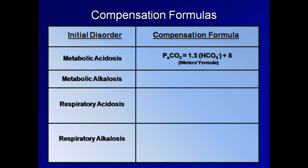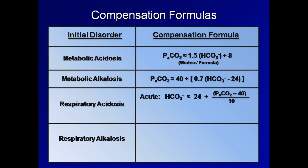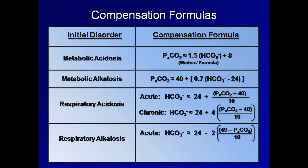For a metabolic alkalosis, pCO2 ≈ 40 + 0.7 × (measured bicarb − 24). For respiratory acidosis and alkalosis, it depends on whether the process is acute or chronic — it takes 12 hours to 5 days for a respiratory process to become chronic. For acute respiratory acidosis: bicarb ≈ 24 + (pCO2 − 40) / 10. For chronic respiratory acidosis: bicarb ≈ 24 + 4 × (pCO2 − 40) / 10. For acute respiratory alkalosis: bicarb ≈ 24 − 2 × (40 − pCO2) / 10. For chronic respiratory alkalosis: bicarb ≈ 24 − 5 × (40 − pCO2) / 10.